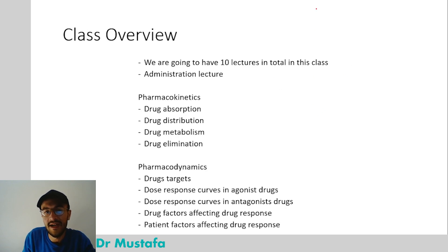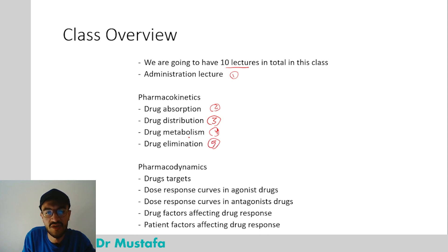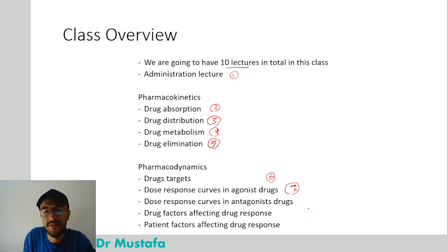In this class we are going to have 10 lectures in total. The first is the administration lecture, then we have four pharmacokinetics lectures — absorption, distribution, metabolism, and elimination — as lectures two through five. Then we have the pharmacodynamics lectures: drug targets, dose-response curves in agonist drugs, dose-response curves in antagonist drugs, factors affecting drug response, and patient factors affecting drug response.